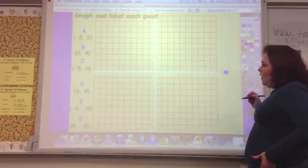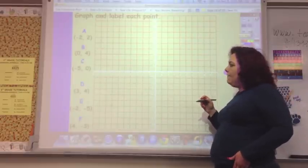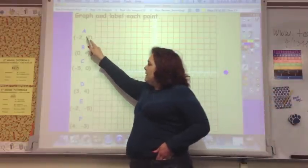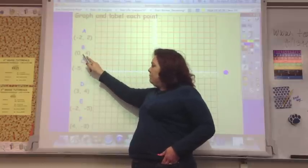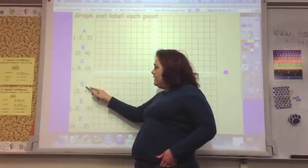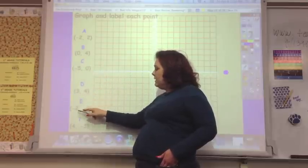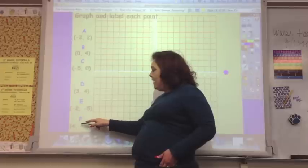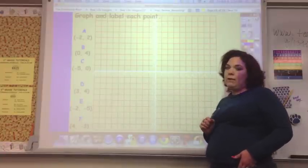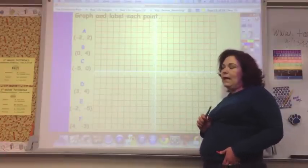So, on your coordinate plane that you have, go ahead and label these and graph each of the points. A is at negative 2, 2. B is at 0, 4. C is at negative 5, 0. D is at 3, 4. E is at negative 2, negative 5. And F is at 4, negative 3. So, you'll plot those on your coordinate plane, and take that to class.